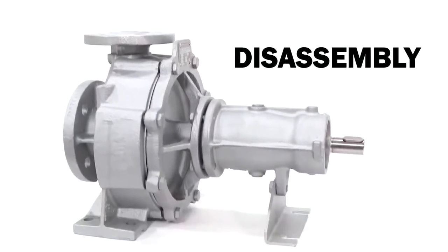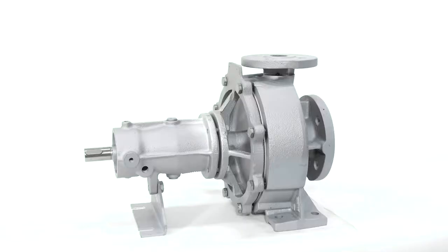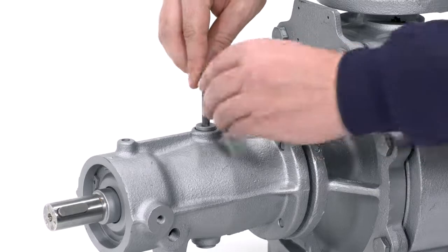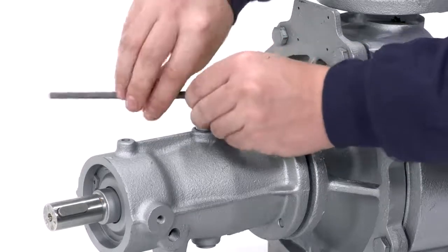Pump disassembly: Place the pump on a workbench horizontally in order to drain any remaining oil. Remove the vent and fill plugs using a 6mm hex key and drain the oil from the bearing housing.